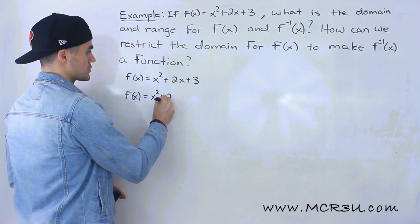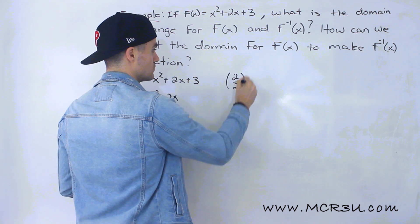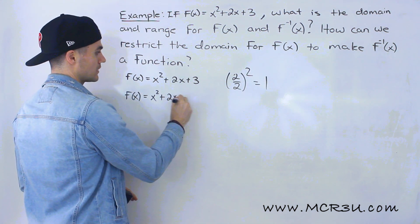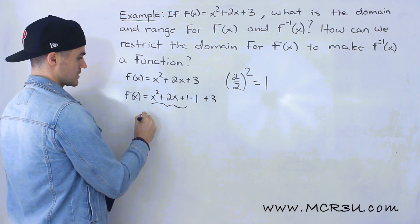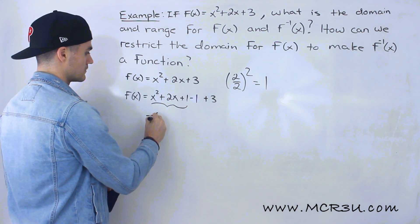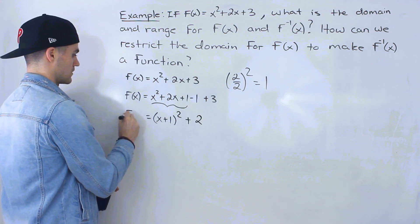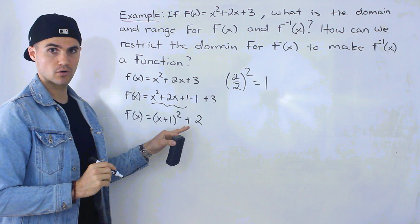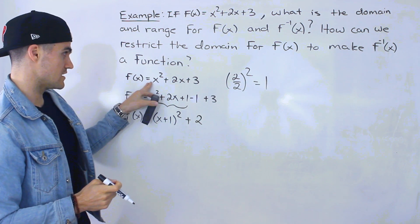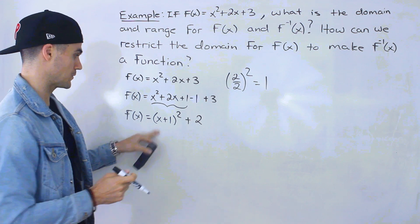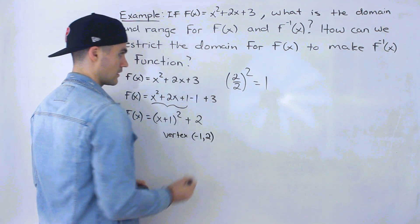We have x² + 2x. Take half of 2, which is 1, and square it to get 1. So we add plus 1 minus 1, plus that 3 out there. Those three terms form a perfect square trinomial: (x + 1)², and then −1 + 3 gives us +2. So we've converted to vertex form, and the vertex is at (−1, 2).